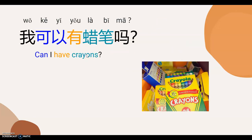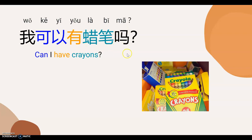Now let's bring in the vocabularies. Crayons. 蜡笔。 Now it's your turn to say crayons. 蜡笔。 So, 'Can I have.' 我可以有吗? Now let's combine these together. 'Can I have crayons?' 我可以有蜡笔吗? Now it's your turn to say 'Can I have crayons.' 我可以有蜡笔吗?